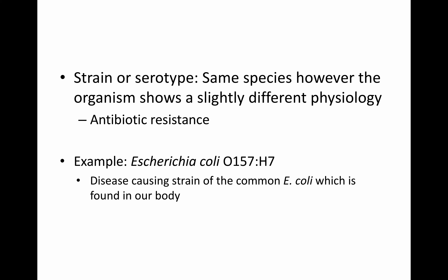Not only are there genus and species, but there are also different strains. For example, E. coli O157H7 — that strain indicates the species is different physiologically in some way. It could be a toxin-producing strain or an antibiotic-resistance strain. O157H7 indicates a toxin-producing strain of E. coli, which is a pathogen, unlike regular E. coli which is normal microbiota.